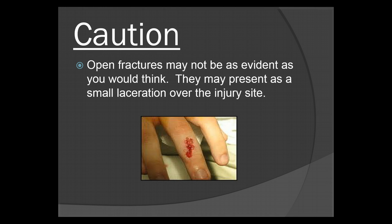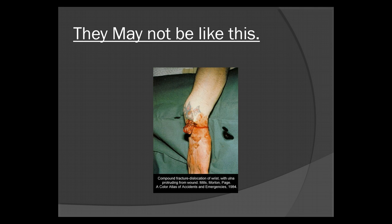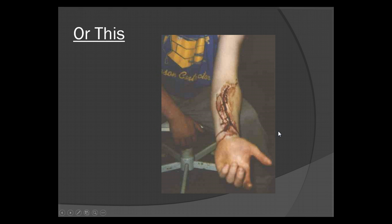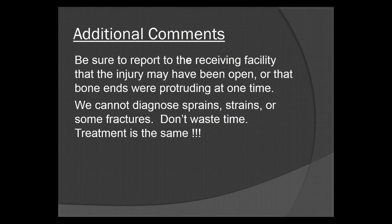Open fractures may not be as evident as you would think. They may present as a small laceration over the injury site, just like this picture — it just looks like a basic laceration. But you have to be very careful. They won't always look like this. Notice the bone protruding from the skin. This is a compound fracture dislocation of the wrist, with the ulna protruding from the wound. This is also an open fracture. Note the white matter here from the bone. From a distance or in a picture, this looks like just a laceration, but upon further inspection, you'll note bone protrusion from the wound. Be sure to report to the receiving facility that the injury may have been open or that bone ends were protruding at one time.